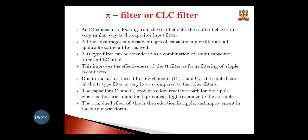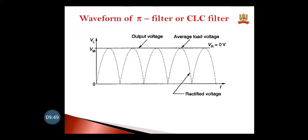You get a more perfect DC output at the CLC filter. This is the output waveform of the CLC filter and you can see here a straight line — that is the DC voltage.